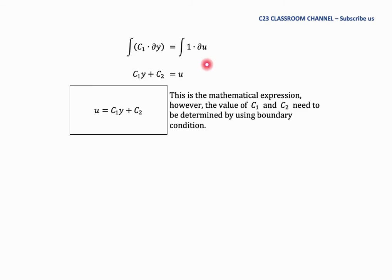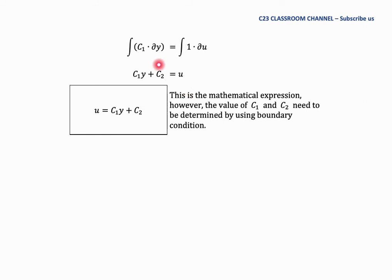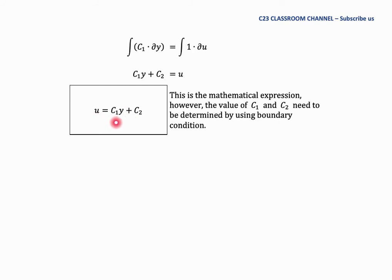Next, we rearrange C1 = ∂u/∂y by bringing dy to the left side, giving C1 dy = du. Integrating both sides, the left side gives C1·y plus a second constant C2, and the right side gives u. So the general velocity profile is u = C1·y + C2.